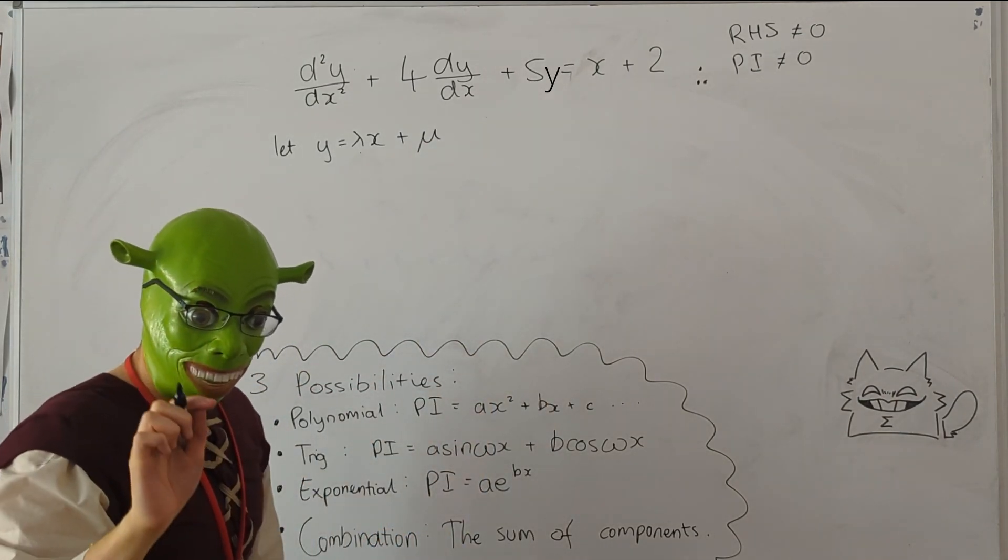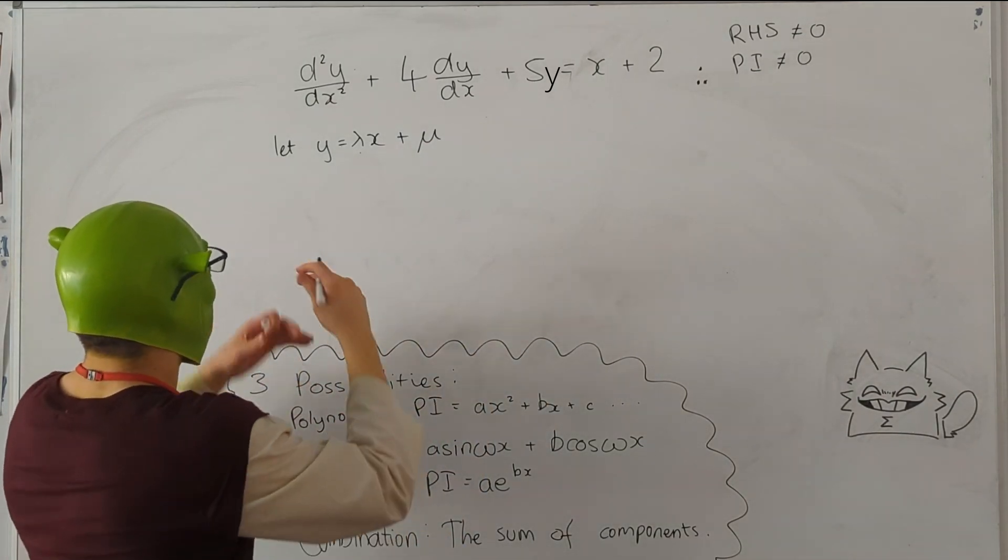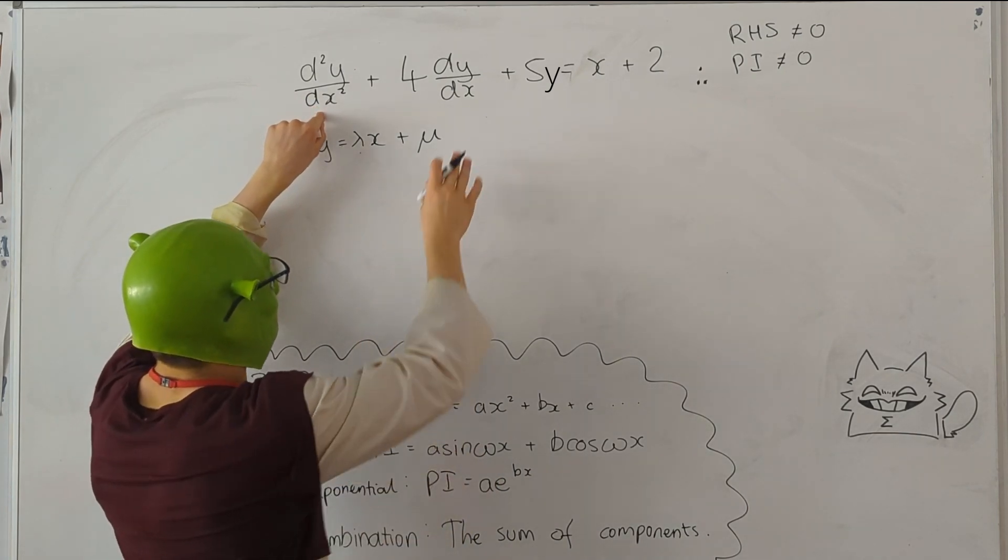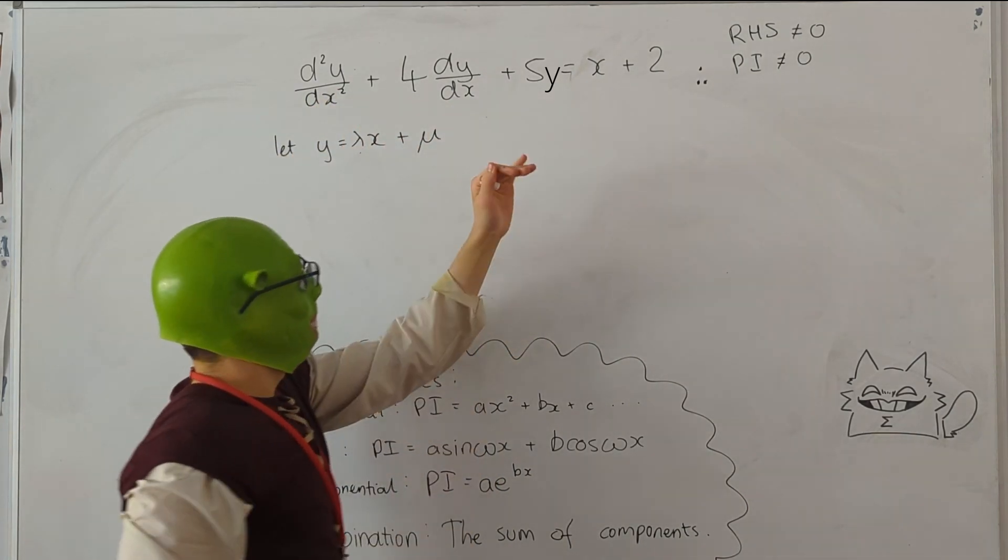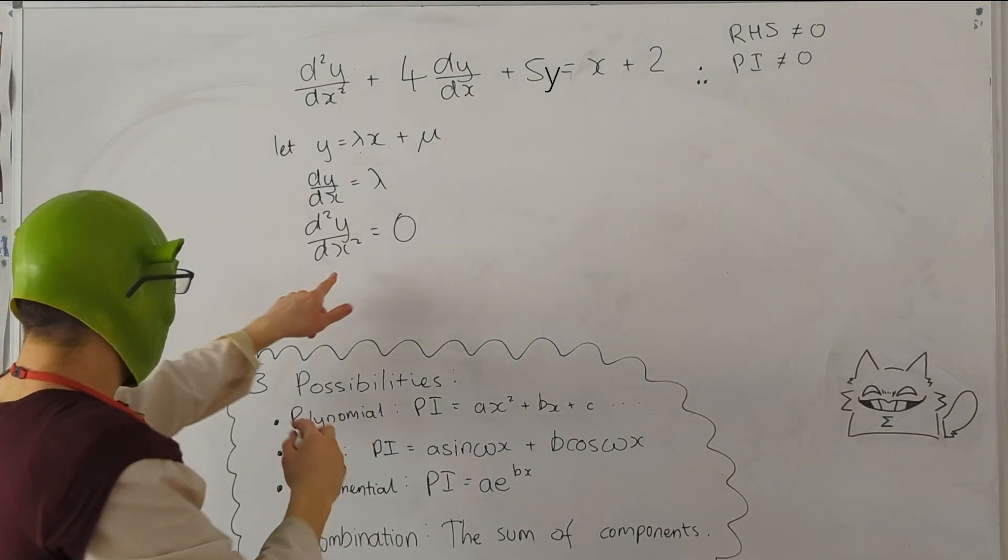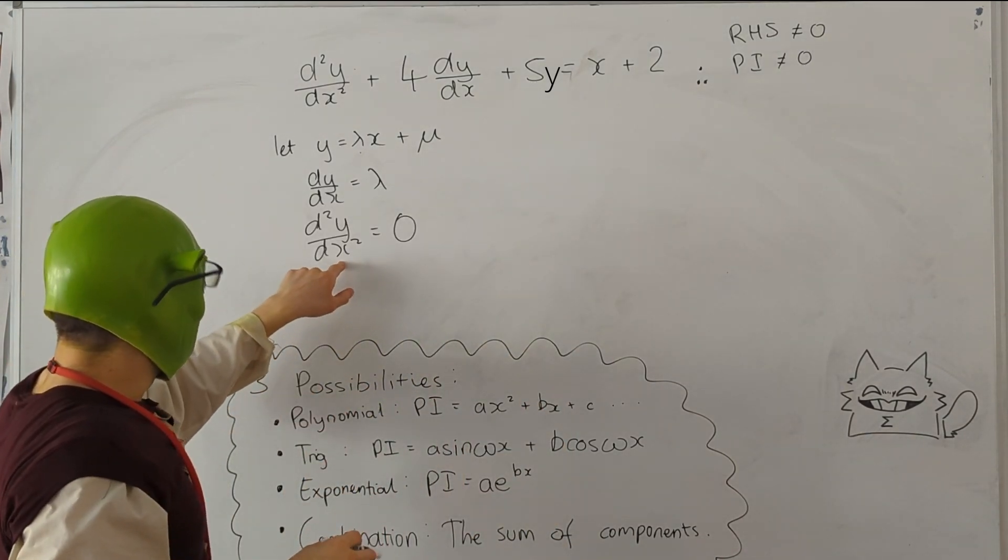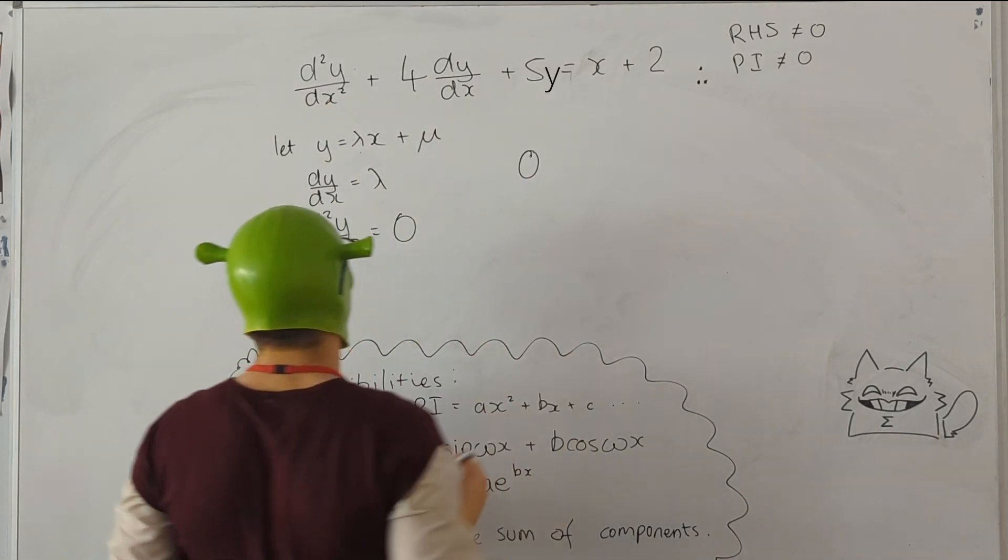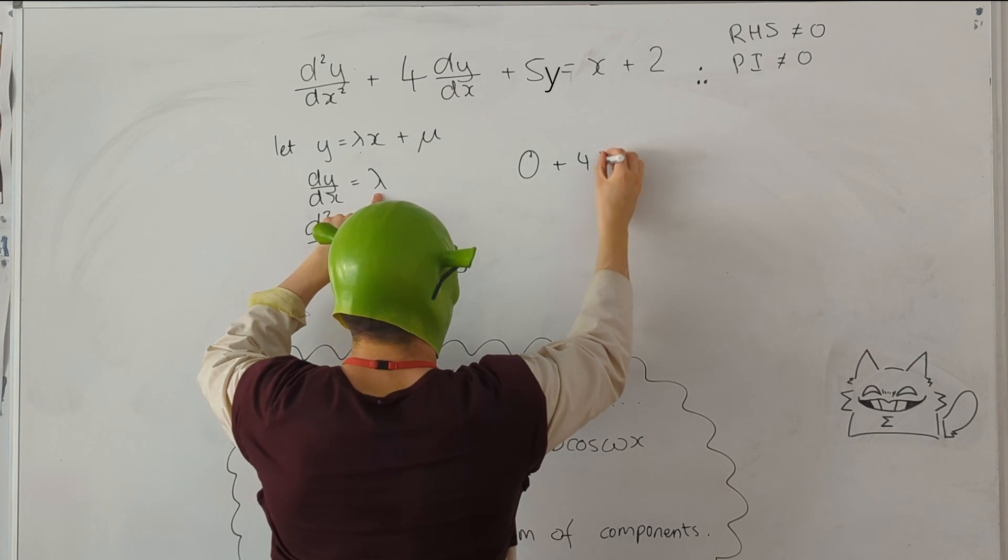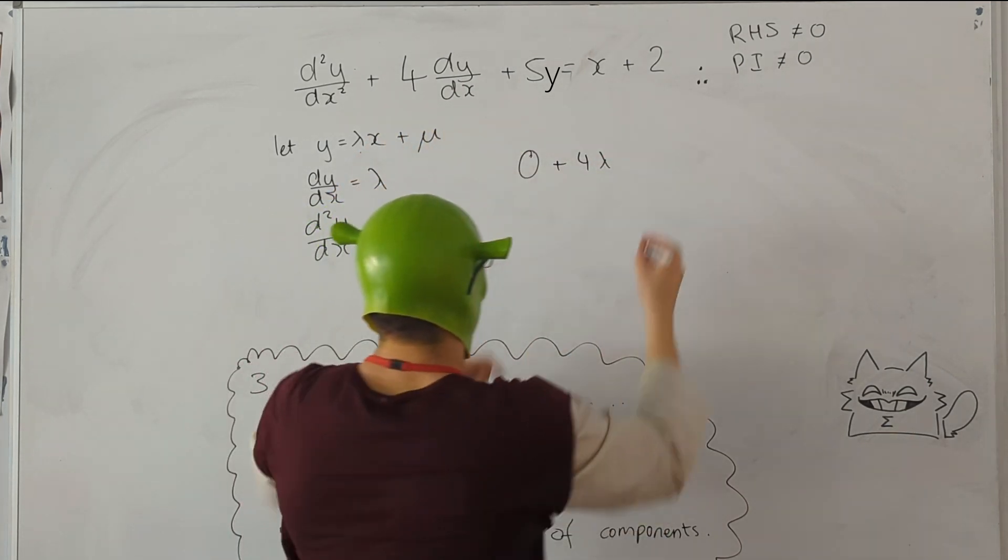So now what we're going to do is we're going to differentiate, and then once we differentiate, we can substitute in d squared y by dx squared and dy by dx, and we can get an equation and solve it. So now that we know d squared y by dx squared is 0, we can put in 0.